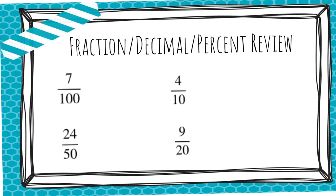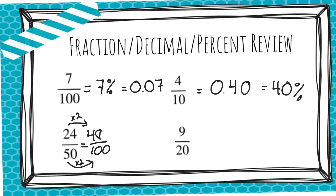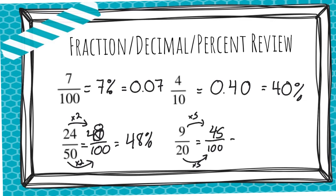Now let's take a look at changing fractions to percents and decimals. Seven out of a hundred would be seven percent, and we would also write that as seven hundredths. Four tenths can be written as four tenths, and if we needed it to be out of a hundred, we can add the zero at the end, which tells us it's 40 percent. For 24 fiftieths, we need to make that out of a hundred before we change it into a decimal. So 50 times two is 100, and 24 times two is 48, which would be 48 percent. Then we have nine twentieths — we also need to make this out of a hundred, so we multiply both by five, which gives us 45 hundredths, which would be 45 percent, and the decimal would be 45 hundredths.